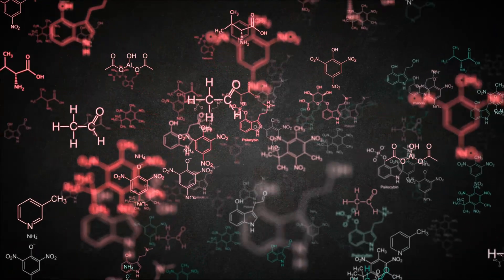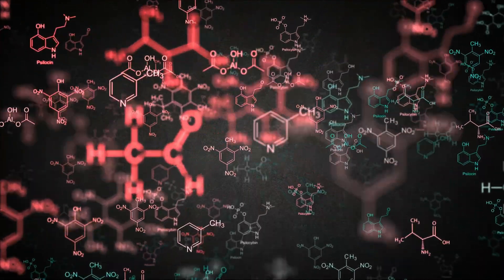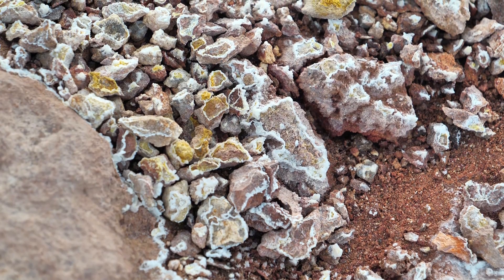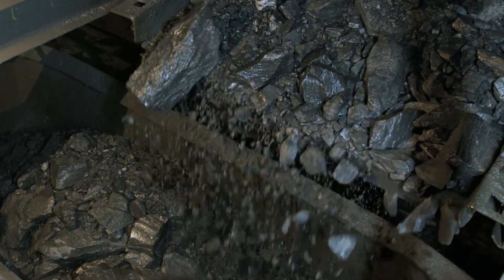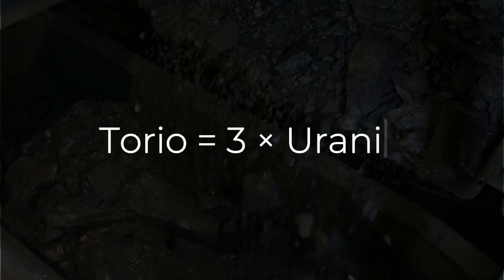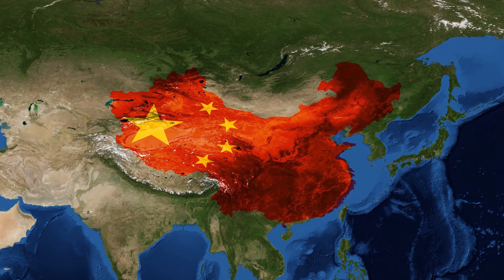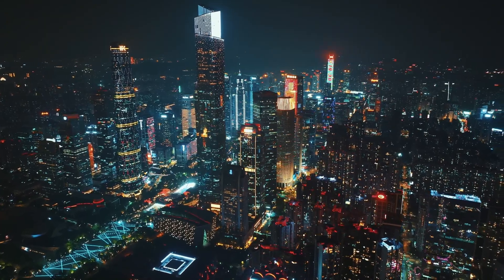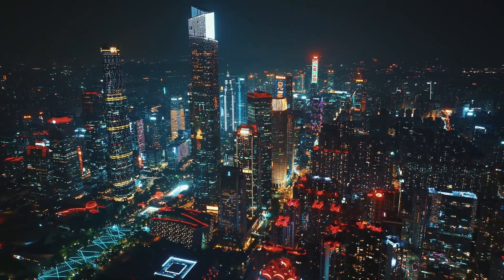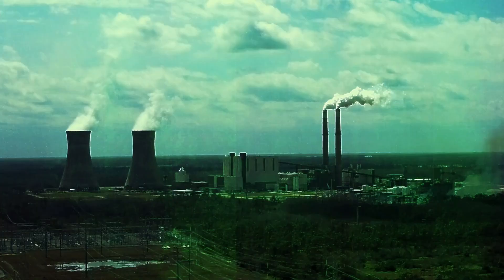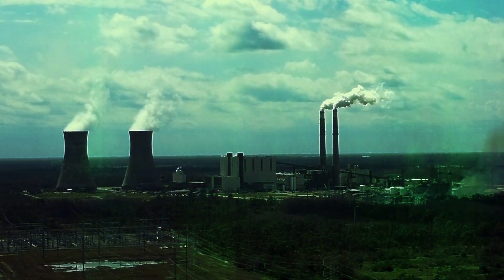Thorium's advantages over uranium are so overwhelming that it seems too good to be true. The first advantage is abundance. Thorium is approximately three times more common than uranium in the Earth's crust. China alone has sufficient reserves to cover its energy needs for the next 20,000 years. India, which has the world's largest thorium reserves, could become an energy superpower overnight.